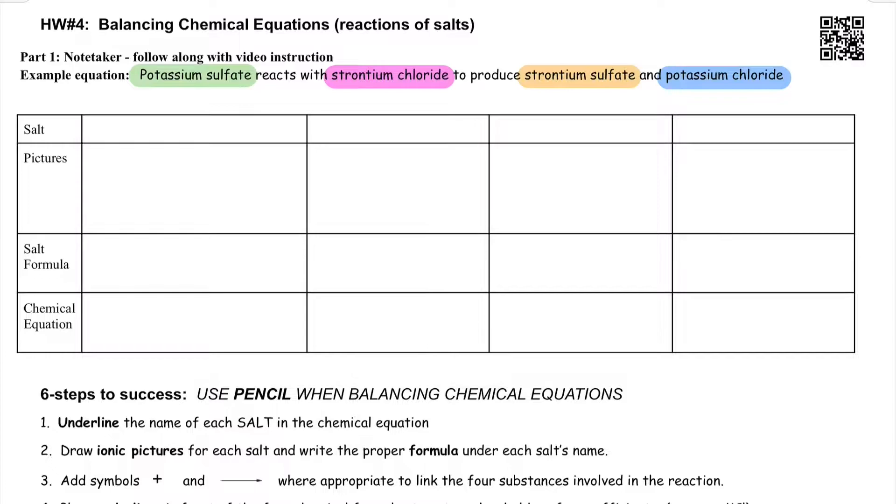First we'll start with reading our equation. Potassium sulfate reacts with strontium chloride to produce strontium sulfate and potassium chloride. I'm going to take a moment and write those in the boxes on the top where it says salt. You do the same. Done with the first part. It's helpful to highlight or underline the salts in the phrase. So that's our first part.